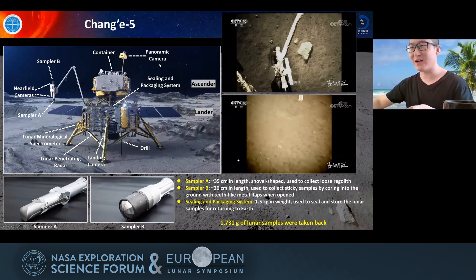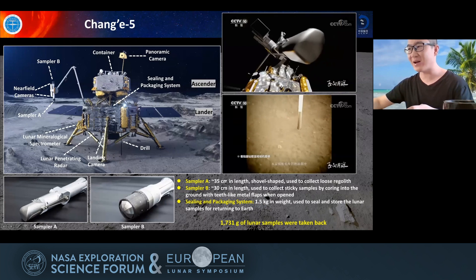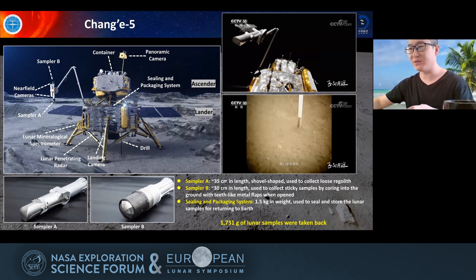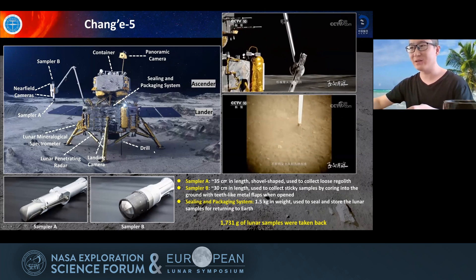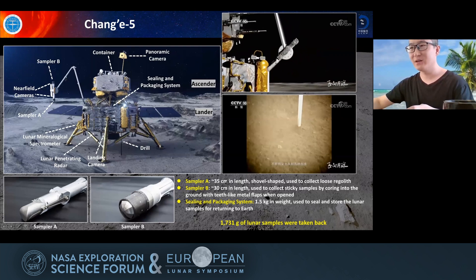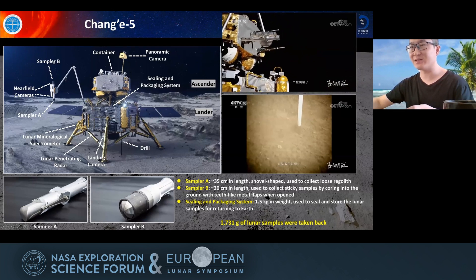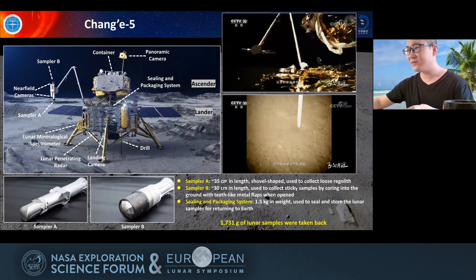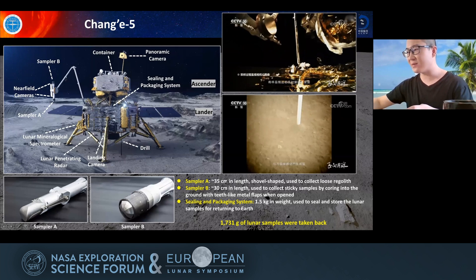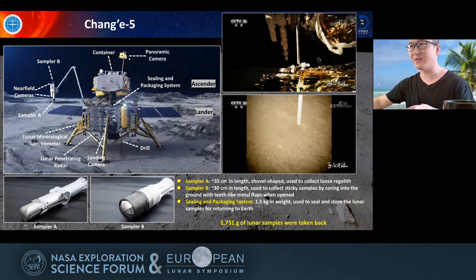What is the Chang'e-5 mission? Chang'e-5 is China's first lunar sample return mission. There are two methods used to sample lunar regolith: the first method is using a drill to sample the subsurface materials, and another method is using sampler A and sampler B to sample the surface. In total, 1,731 grams of lunar samples were returned to Earth by Chang'e-5.